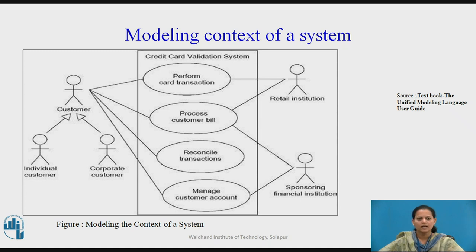To model the context of a system, identify the actors that surround the system by considering: which groups require help from the system to perform their tasks, which groups are needed to execute the system's functions, which groups interact with external hardware or other software systems, and which groups perform secondary functions for administration and maintenance. Organize actors that are similar to one another in a generalization-specialization hierarchy. Where it aids understandability, provide a stereotype for each such actor. Populate a use case diagram with these actors and specify the paths of communication from each actor to the system's use cases.